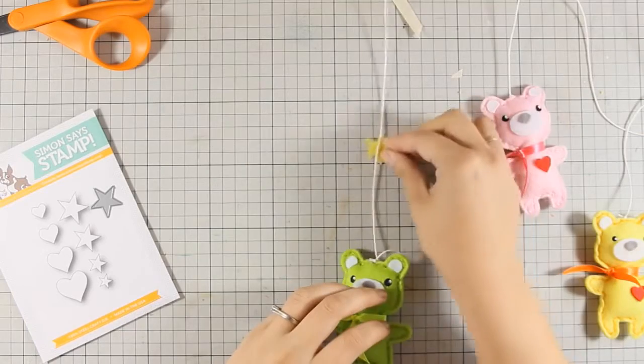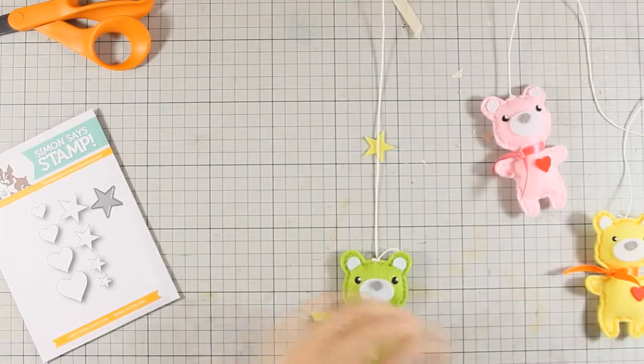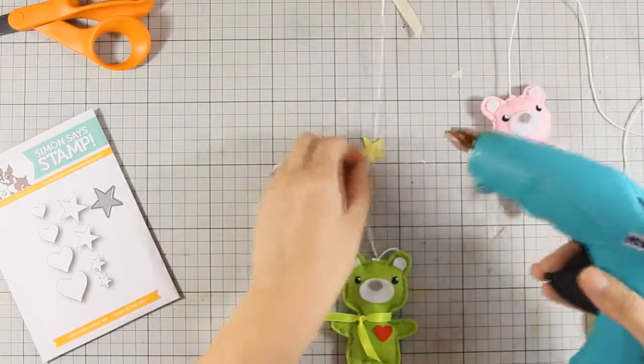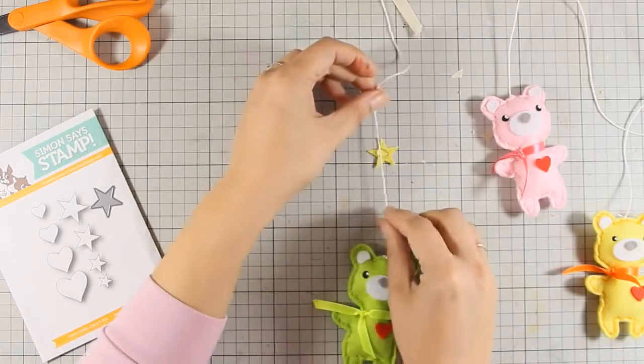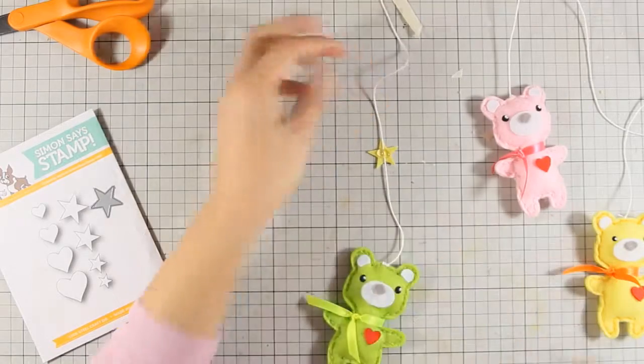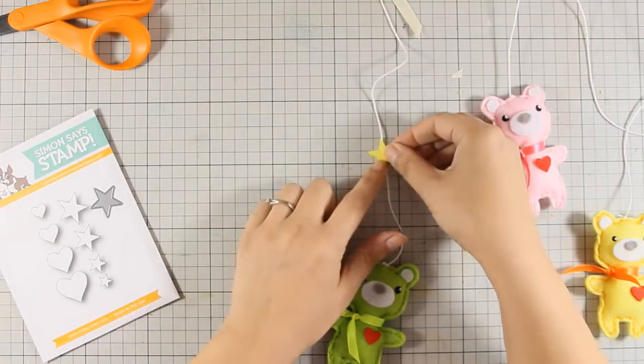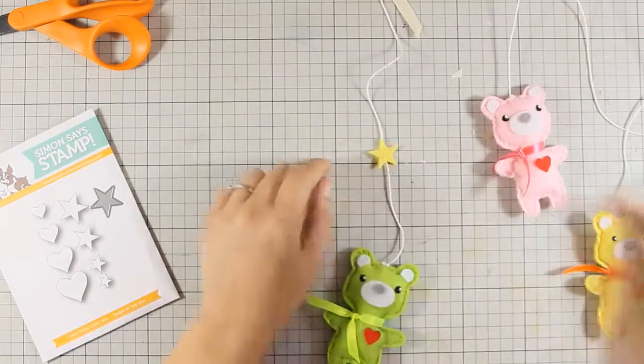I am going to show you what I mean. I have cut out some stars out of dies that I already had, which I am just going to add a dot of hot glue, stick them on the thread, and then I am just going to cover everything up with one more shape.